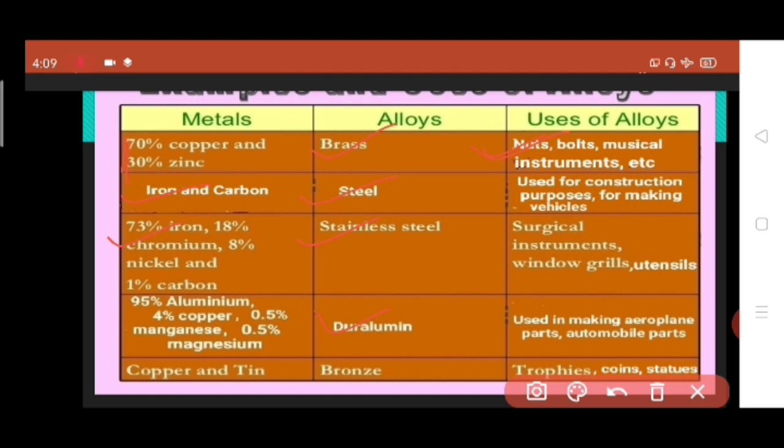Last type of alloy is bronze. It is made up of copper and tin and is used to make trophies, coins, and statues.